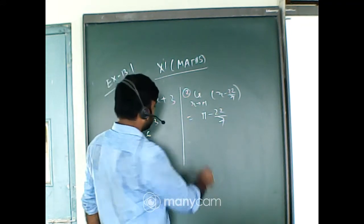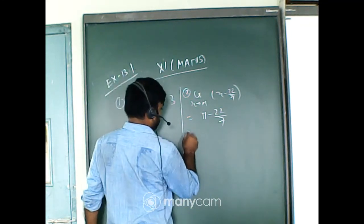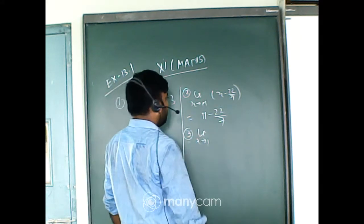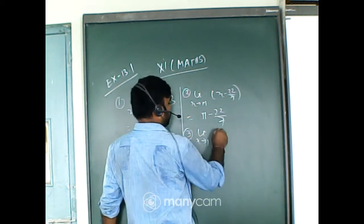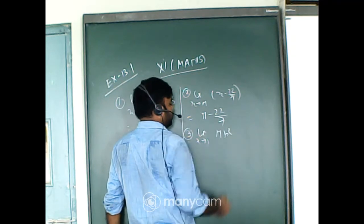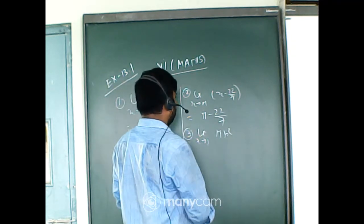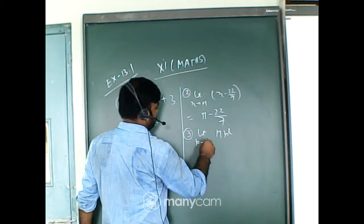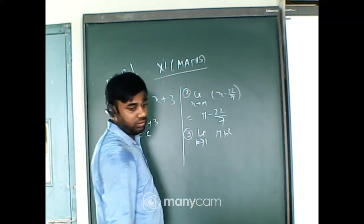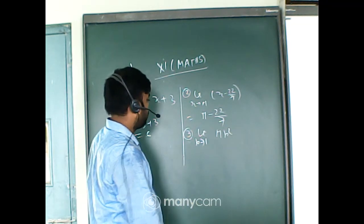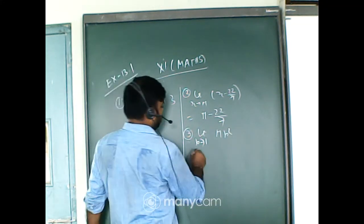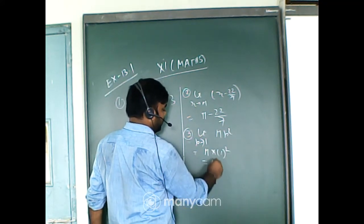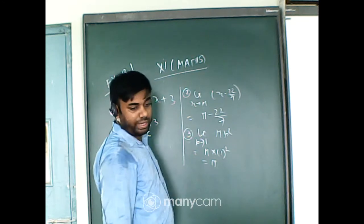Question number three: limit r tends to 1 of pi·r². So pi — in place of r put 1 — so pi times 1 squared equals pi. Got it?